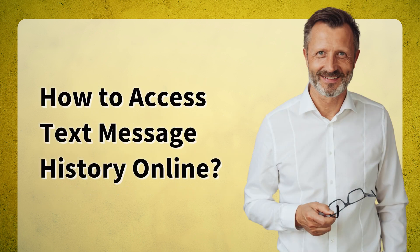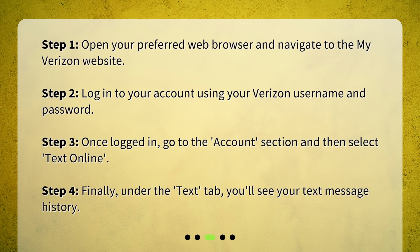How to access text message history online? Step 1: Open your preferred web browser and navigate to the My Verizon website. Step 2: Log into your account using your Verizon username and password. Step 3: Once logged in, go to the Account section and then select Text Online. Step 4: Finally, under the Text tab, you'll see your text message history.